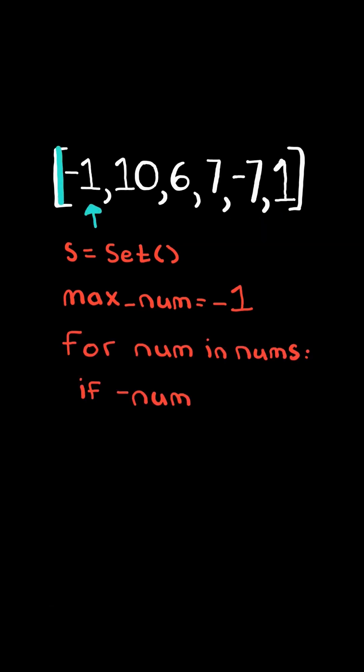We then iterate through the list. We consider the negative of the number if it exists in the set. We would set max num to the max of the absolute value of the current number or itself.